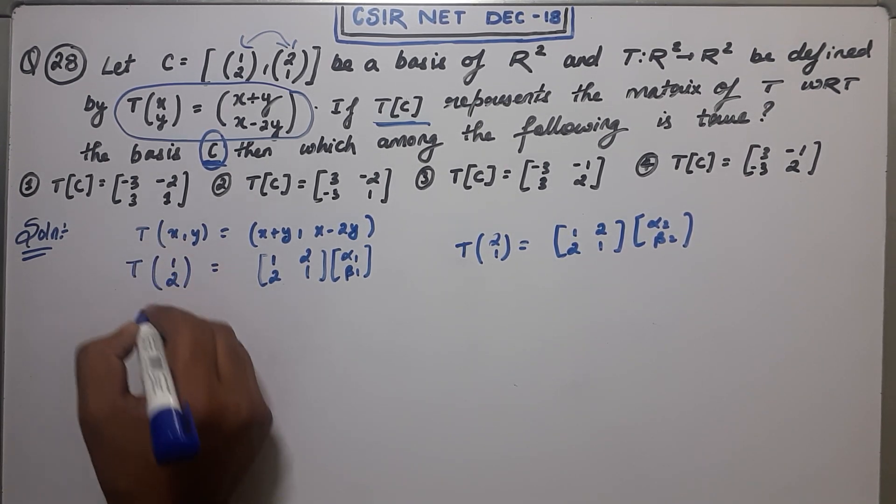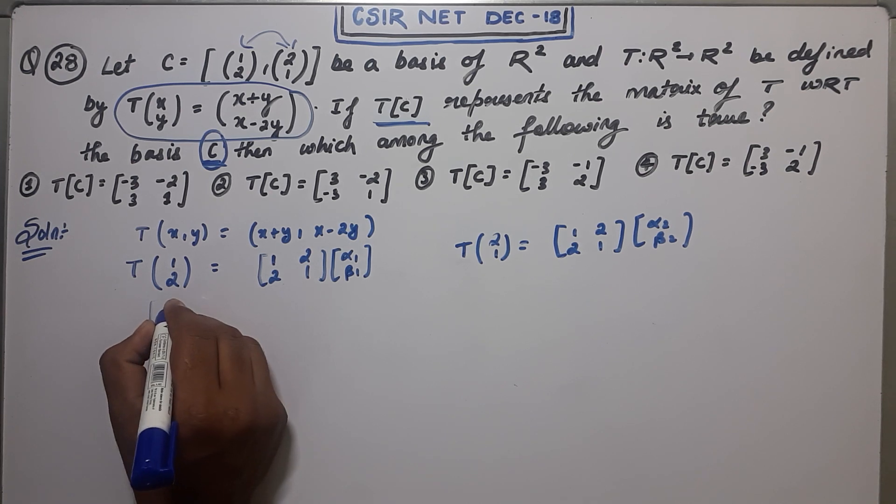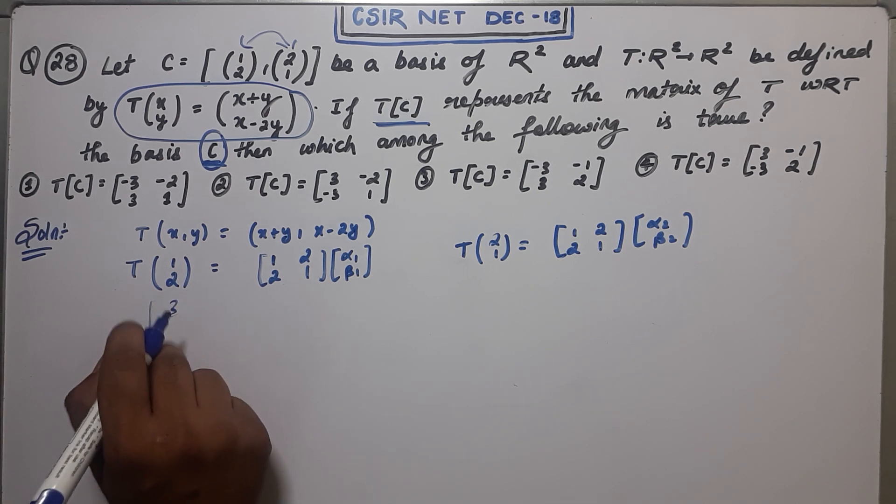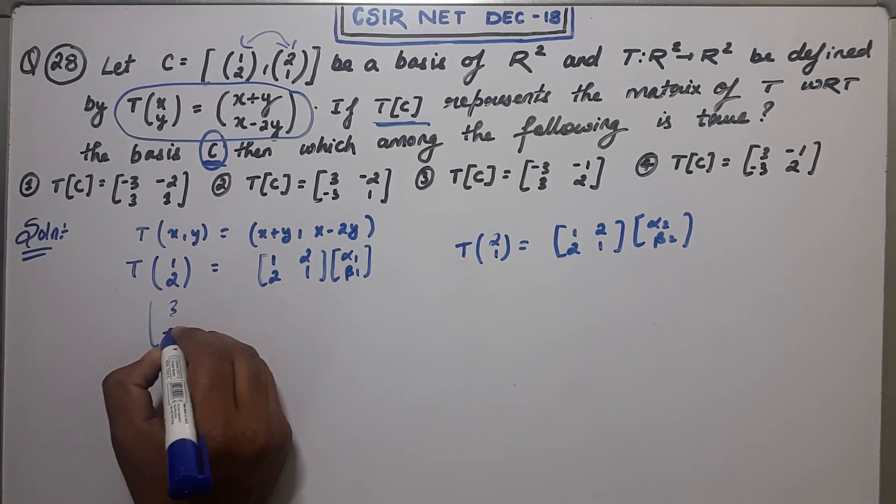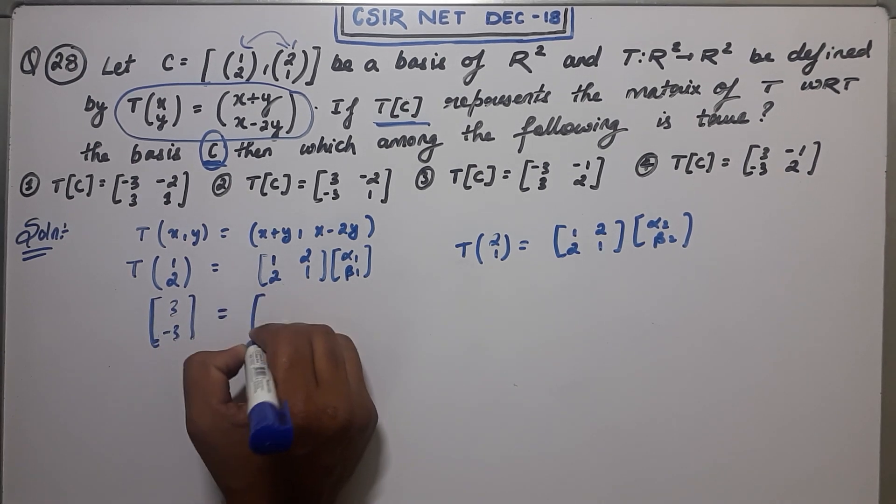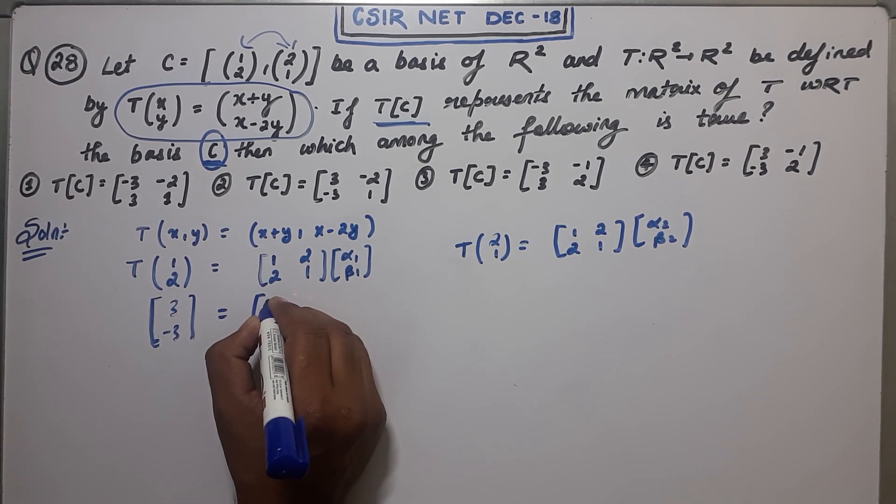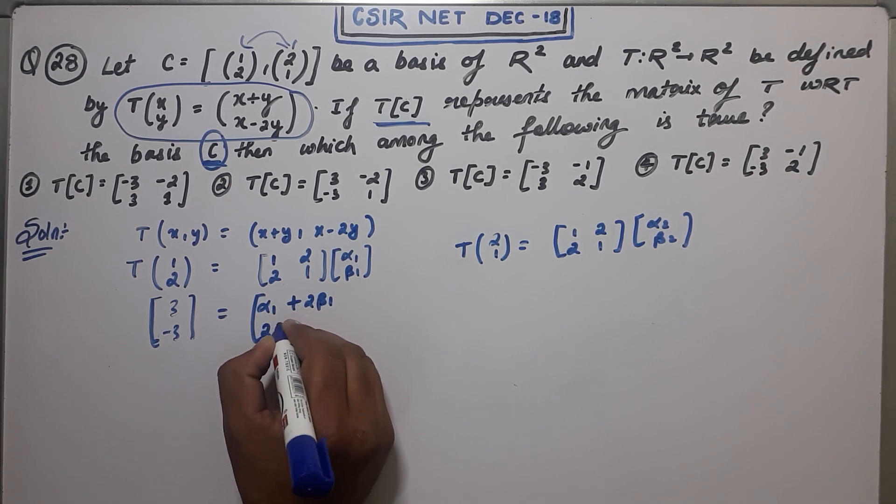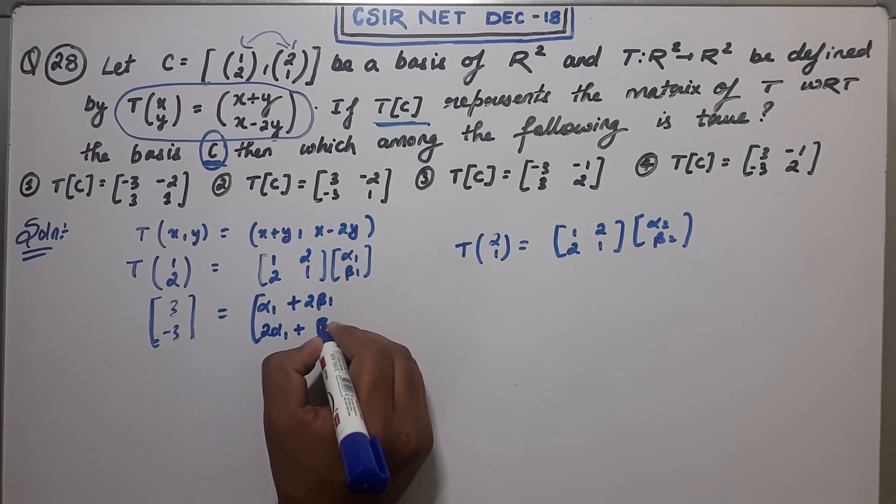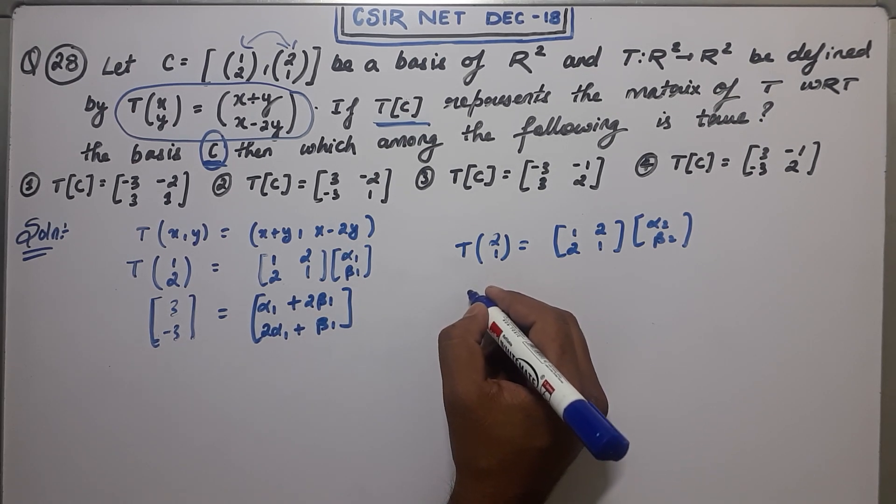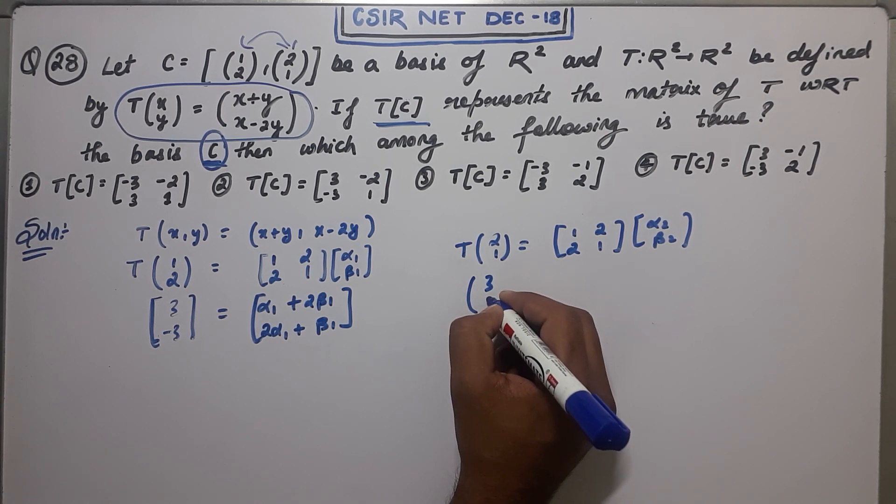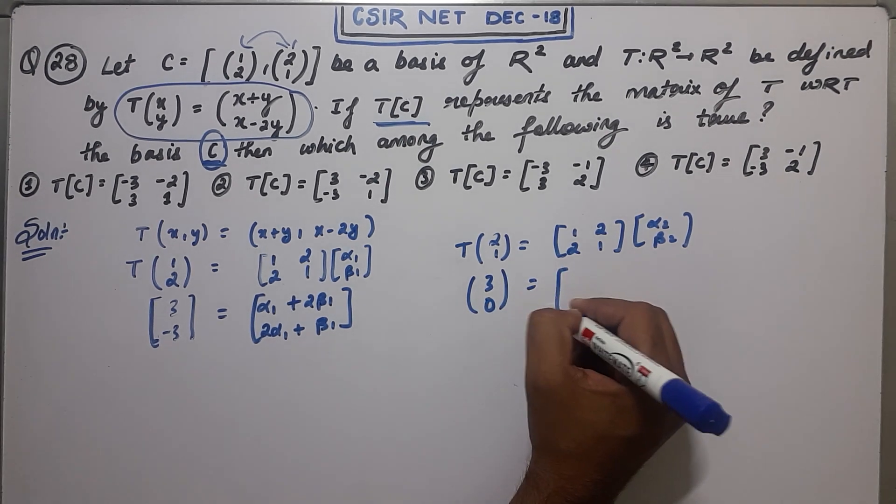What you will get? You will get 3, you will get -1, -2. You will get 1, 2. So you will get -3 here. From here what you are getting? You are getting alpha 1 plus 2 beta 1, 2 alpha 1 plus beta 1. And from here what you will get? You will get (3, 0).